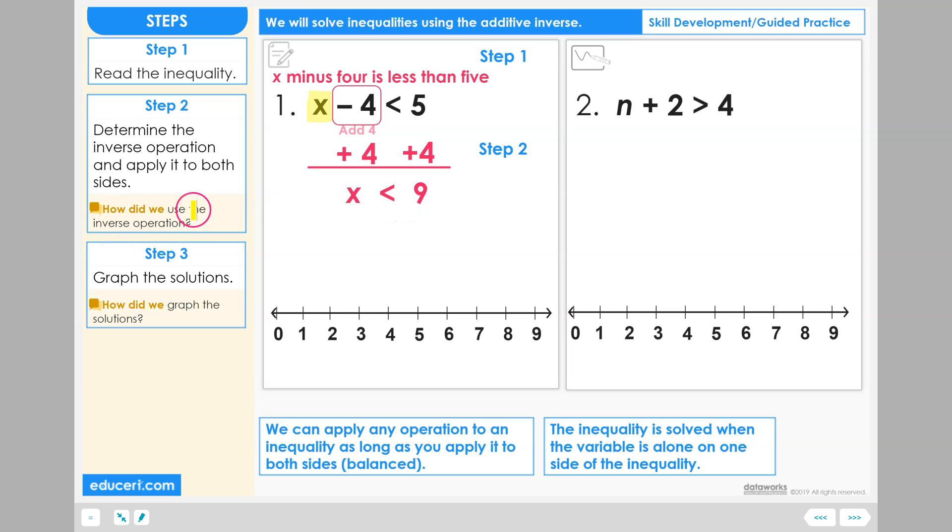How did we use the inverse operation? We use the inverse operation, add four, to both sides of the inequality to have the variable X all alone. Now this inequality is solved.